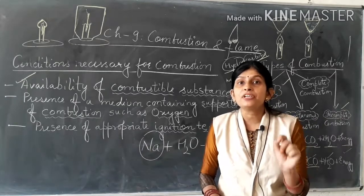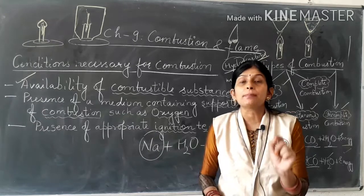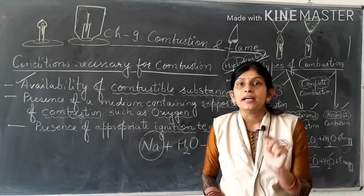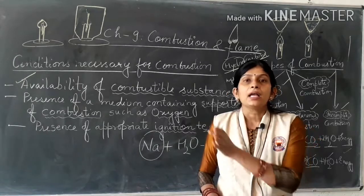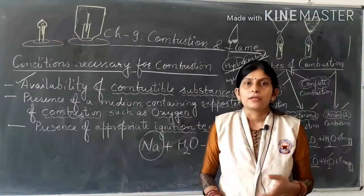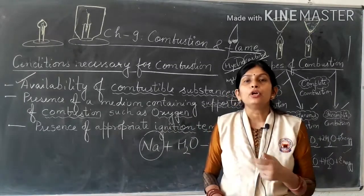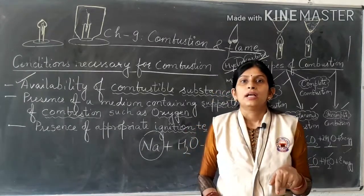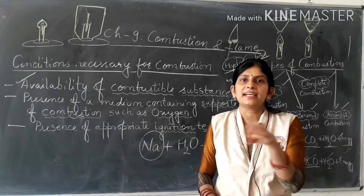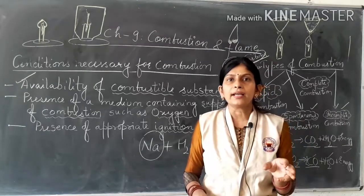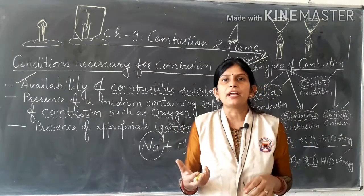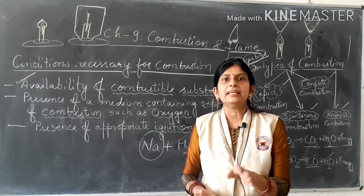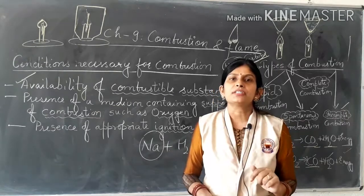Whenever you see a yellow sooty flame from your LPG stove, that means incomplete combustion of LPG is taking place because LPG is not getting sufficient supply of oxygen due to blockage of gas inlets by dirt, insects, or food particles. You need to clean and adjust the gas inlets to remove all blockages. In this way, you can provide sufficient supply of oxygen to the LPG, and it will burn completely.